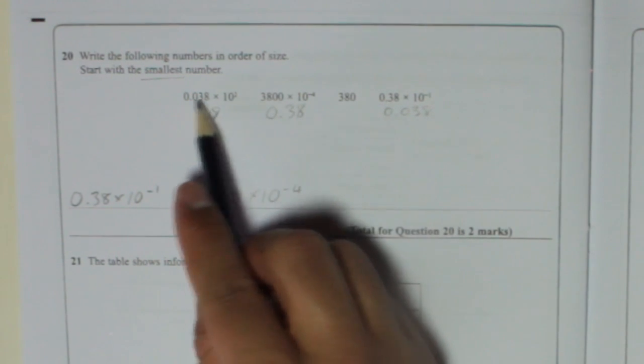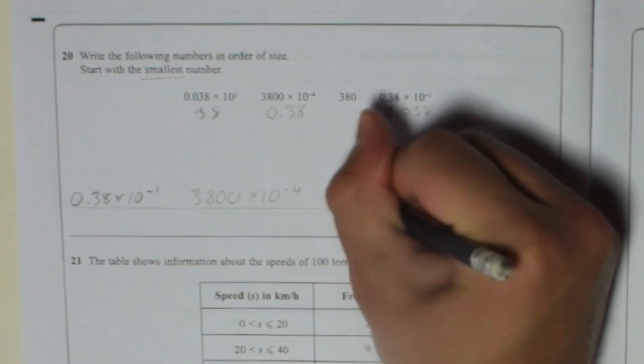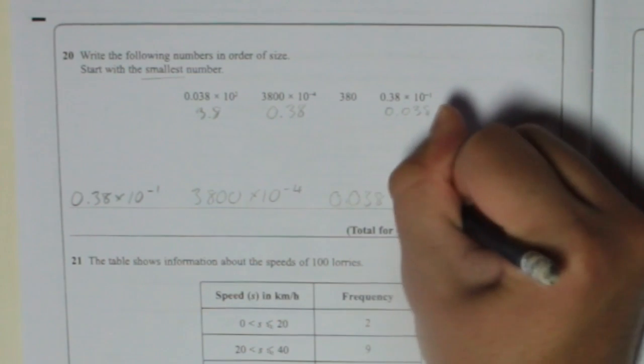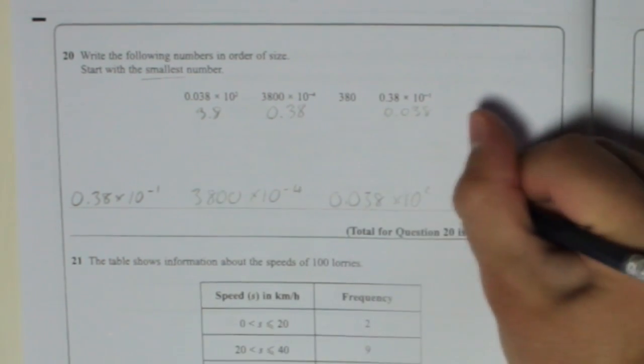And then it's going to be 3.8, which is 0.038 times 10 to the power of 2. And then finally, 380.